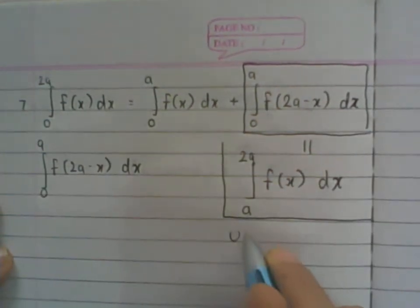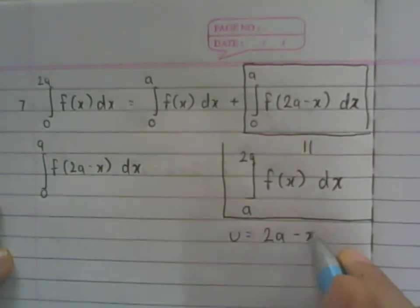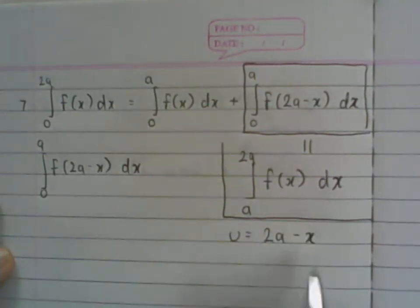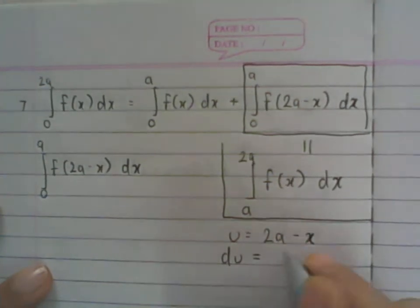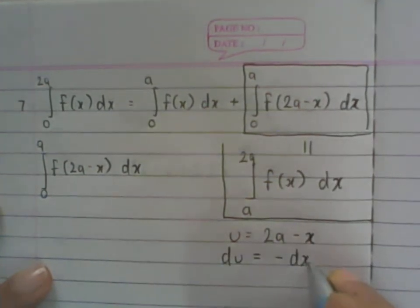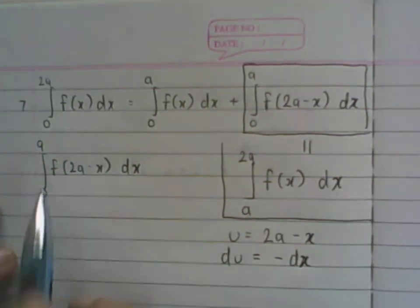I will say u equals 2a minus x. The moment we do u-substitution, we find the differential of u. So the differential of u is negative dx. Since we have a definite integral, we will also take care of the upper and lower limits.